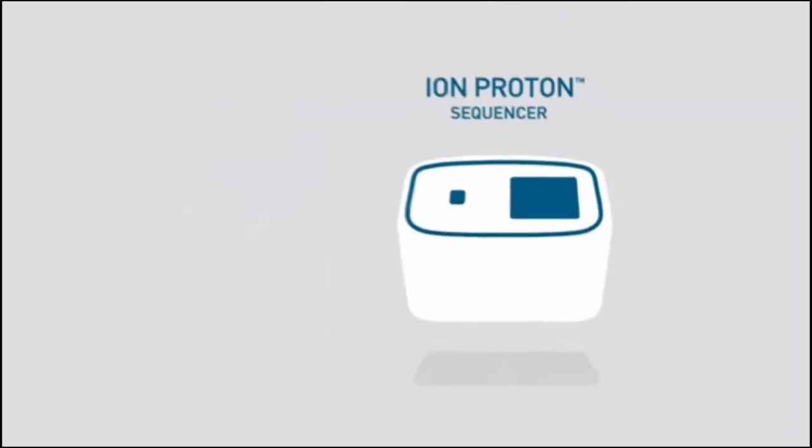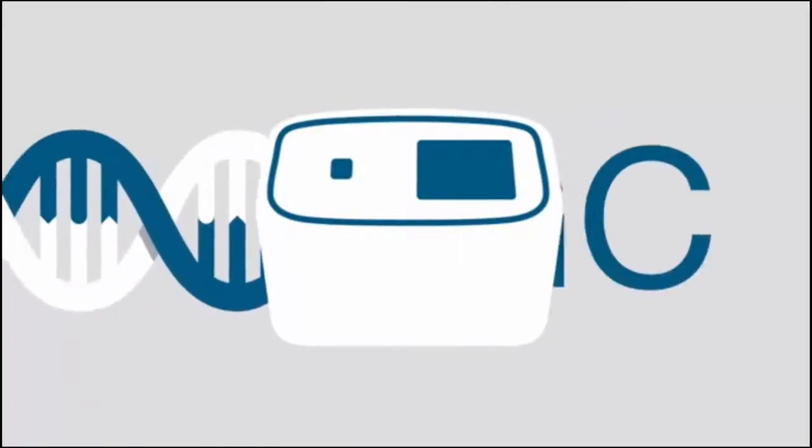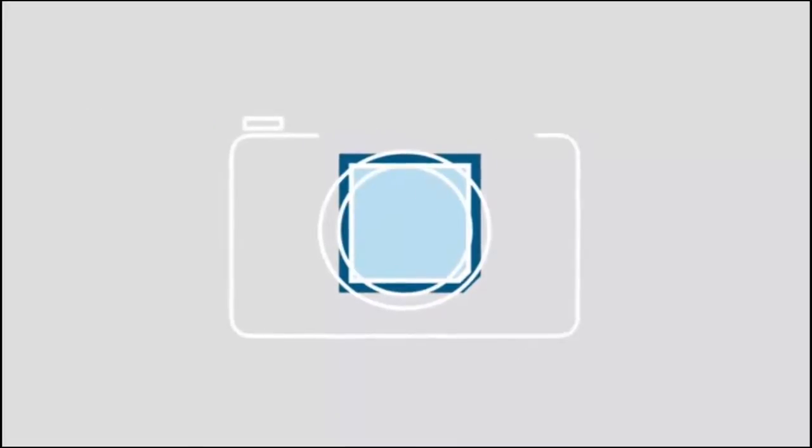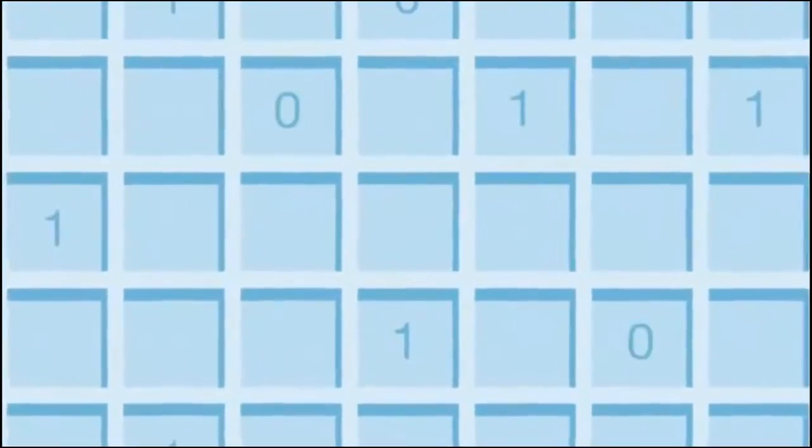Ion Torrent technology takes an entirely new approach to sequencing, making it faster, simpler, and more affordable than ever before. Unlike other sequencing technologies, Ion Torrent systems sequence DNA using a semiconductor chip, similar to the chip found in your digital camera. While the chip in your camera has a sensing layer covered with millions of pixels that translate light into digital information, an Ion chip has millions of wells covering those pixels. These wells capture chemical information from DNA sequencing and translate it into digital information or base calls.